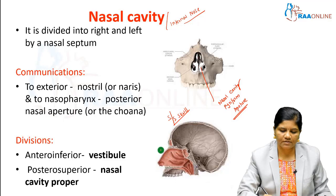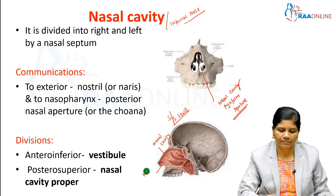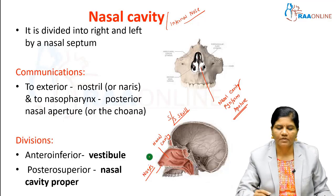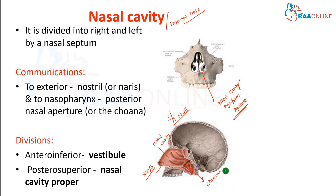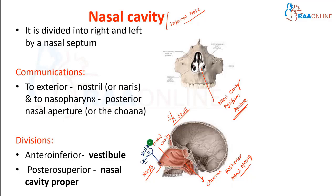This is the nasal cavity. Anteriorly, through the nares, it has a communication with the external environment. Posteriorly, through the opening here, known as the choana or posterior nasal opening, it has a communication with the nasopharynx. Regarding divisions: the antero-inferior part is a smaller part and the postero-superior part is the larger part. The antero-inferior part is otherwise known as the vestibule of the nose, and the postero-superior part is known as the nasal cavity proper.